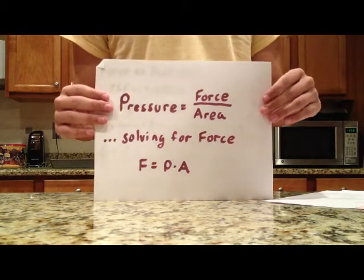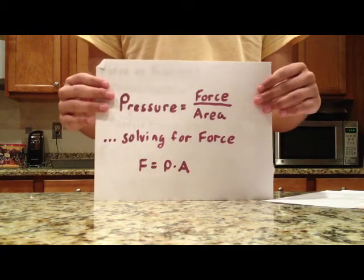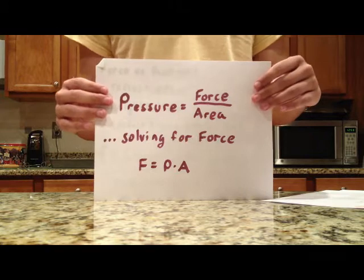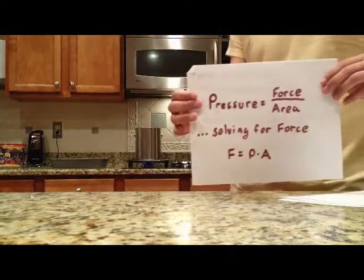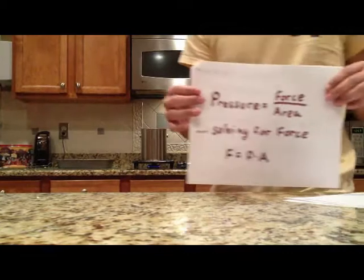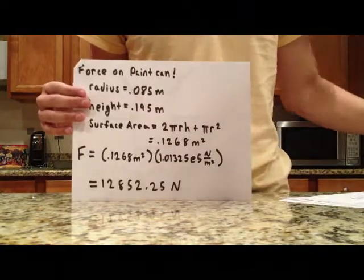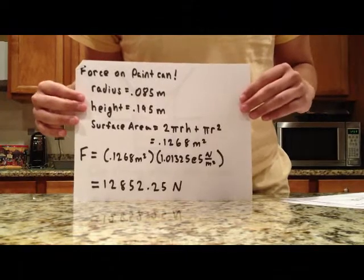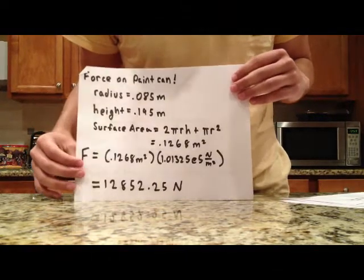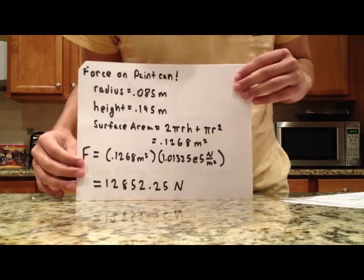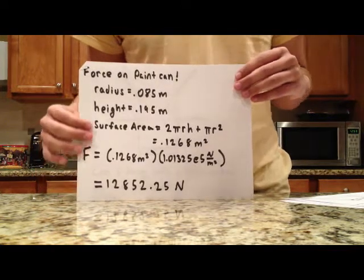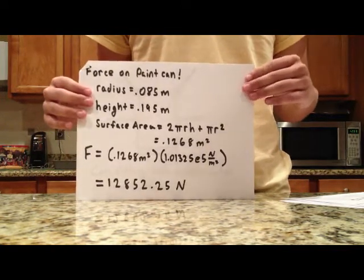Now, using this relationship, we can begin to analyze what the atmospheric pressure on, let's say, a can behind me is. You guys are just going to have to take this for granted - I went ahead and measured it with a tape measure and everything. I ended up multiplying through and getting the number 12,852.25 newtons for the force on the can by the atmosphere.